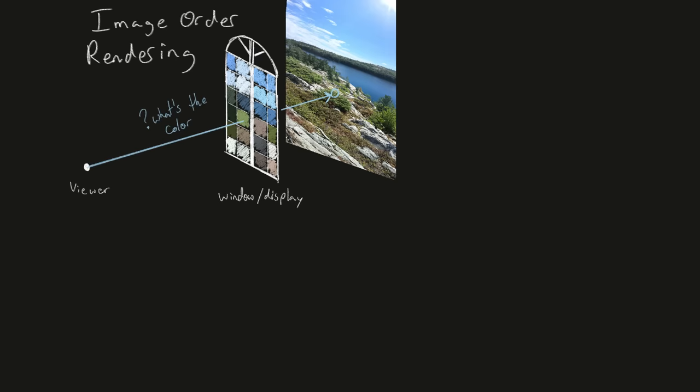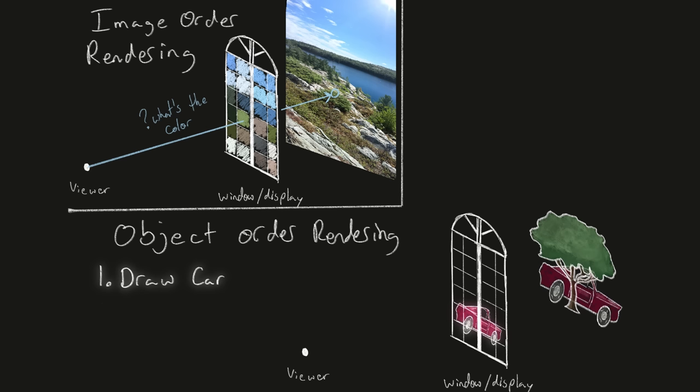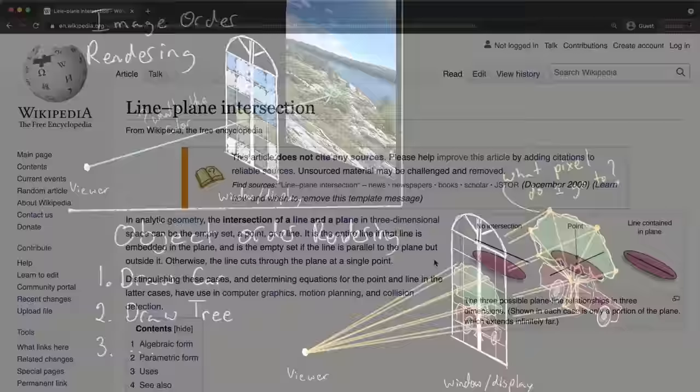The alternative is object order rendering, which is much faster and what we have been using. This is where we draw each object one after the other. This approach maps much better to the GPU, since we can apply the same instructions but on different vertices in parallel. So we could find the location for each projected position within a vertex shader by calculating the line and plane intersection, and this would work just fine.